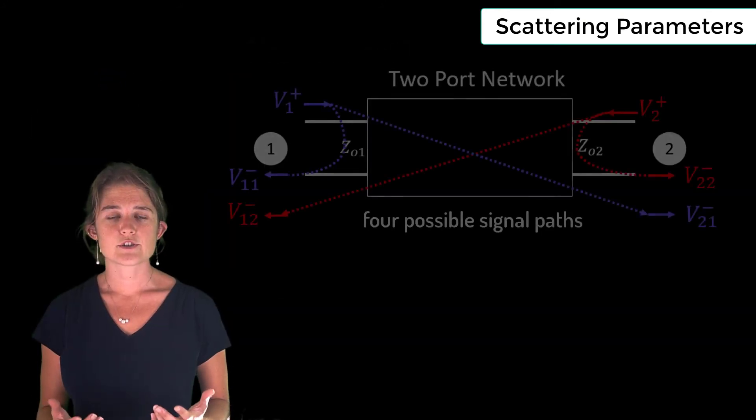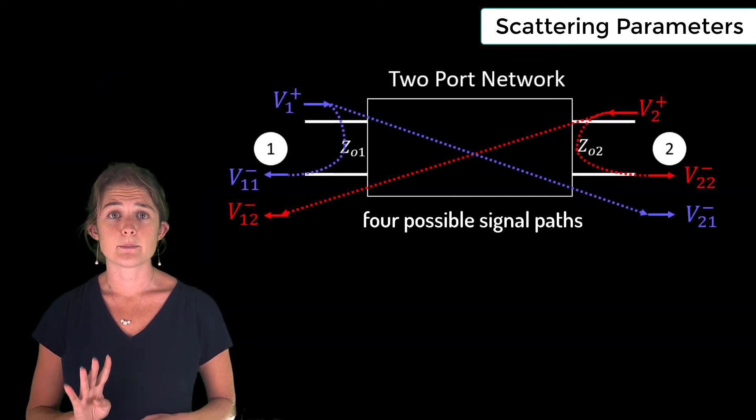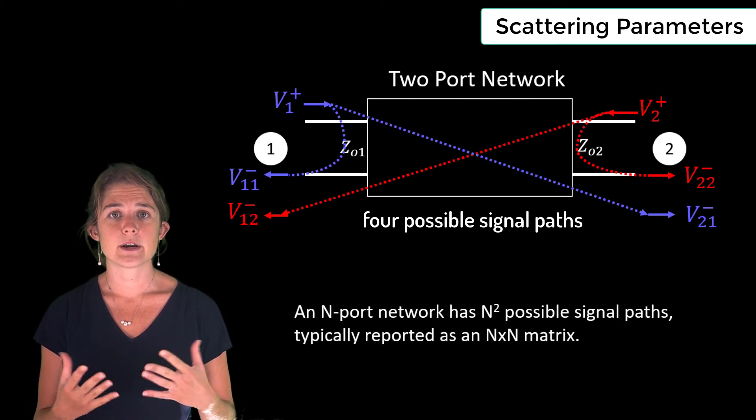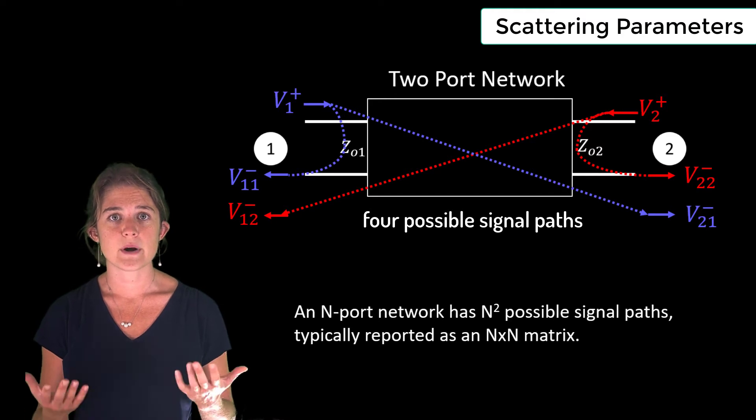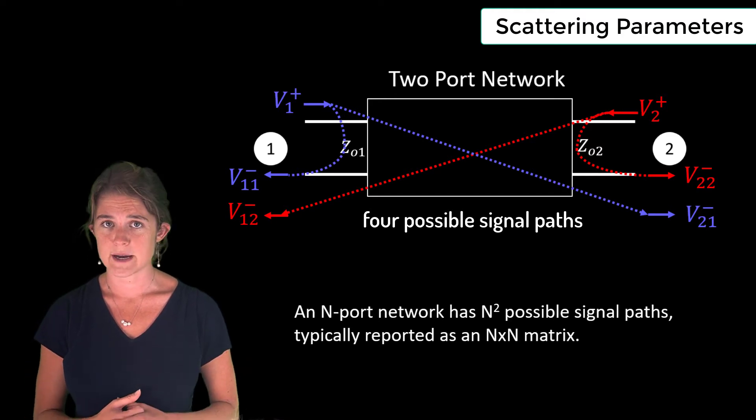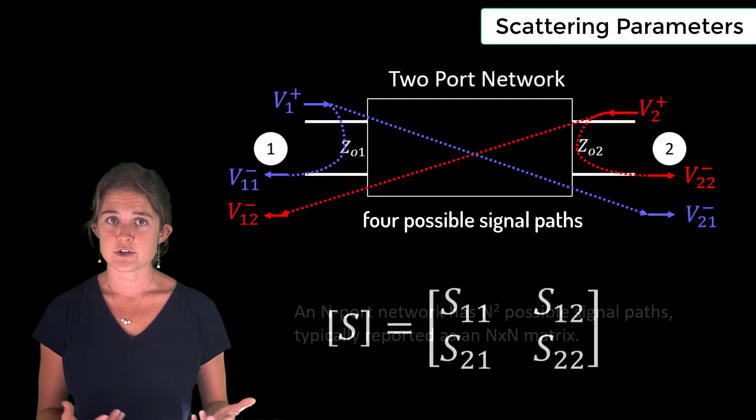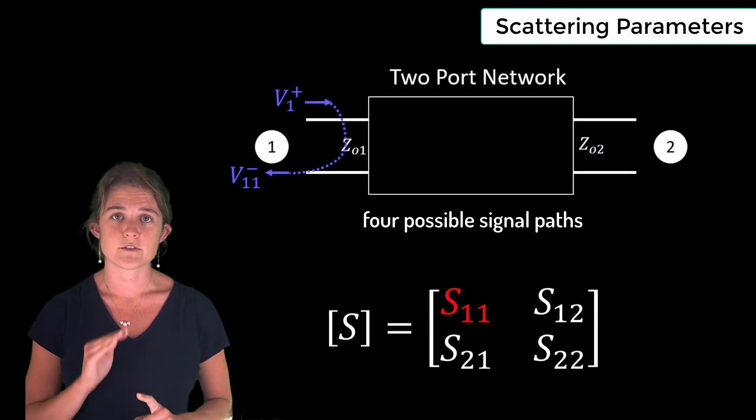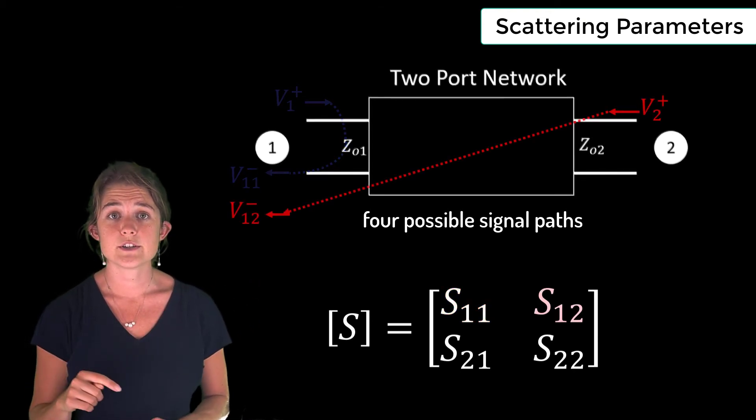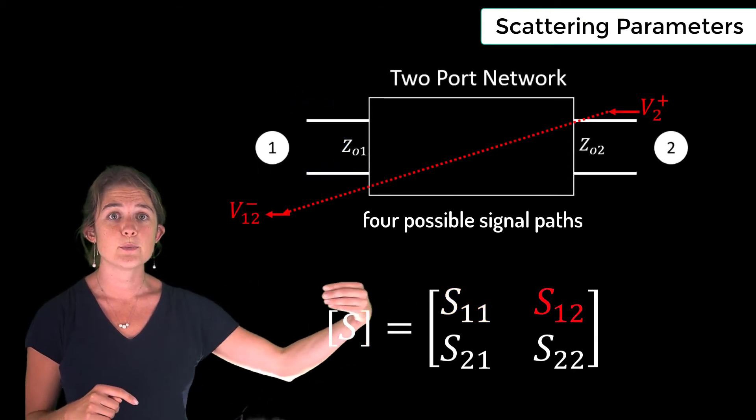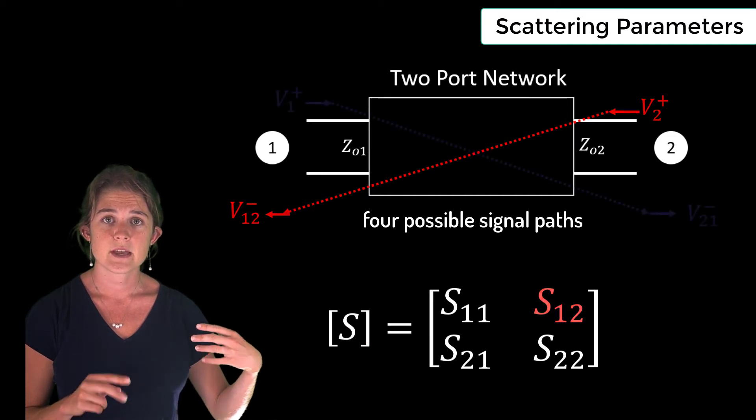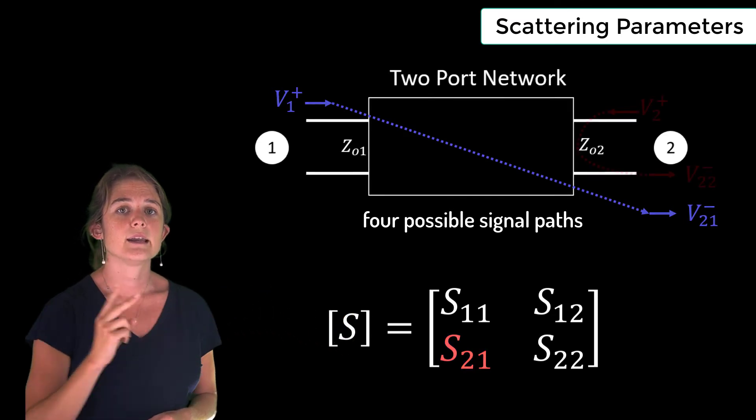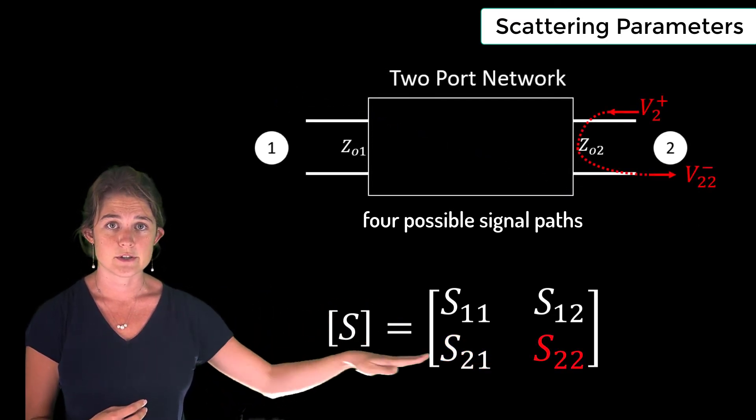The S-parameters of the network describe the flow of voltage along these four possible paths. The S-parameters of an N-port network will typically be reported as an N by N matrix, where there are N squared possible signal paths. For a two-port network, the S-parameters are a two by two matrix with four elements. S11 is a measure of the reflection at port one. S12 is a measure of transmission to port one from port two. S21 is a measure of transmission to port two from port one, and S22 is a measure of reflection at port two.